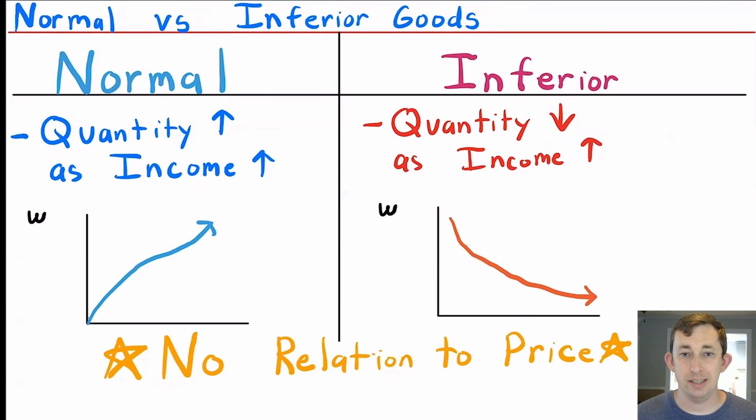So normal versus inferior is based on how the quantity changes with respect to wealth, not how the quantity of that good changes with respect to price.